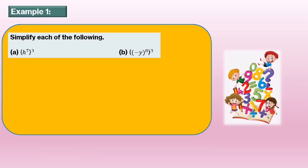Example 1: Simplify each of the following. Part A: h to the power of 7, bracket to the power of 3. As you just learned, when you have a bracket with a power outside, you just multiply the two indices. So h to the power of 7 times 3 equals h to the power of 21.